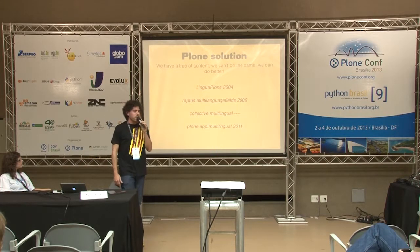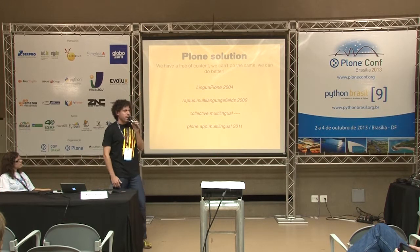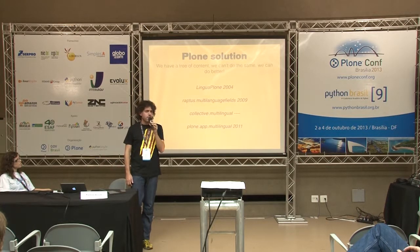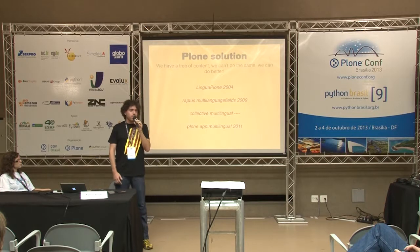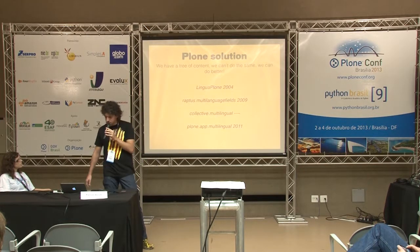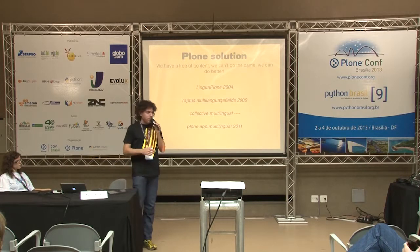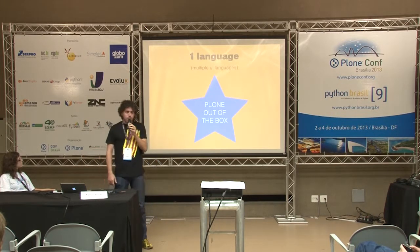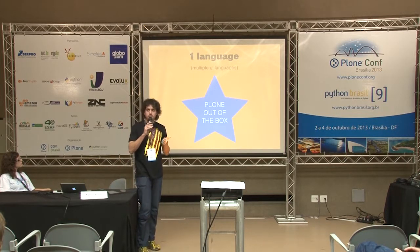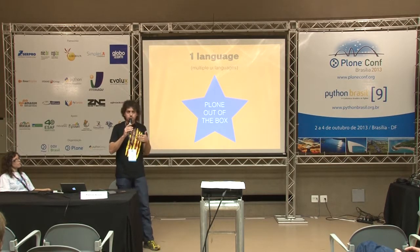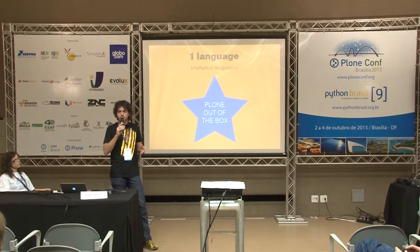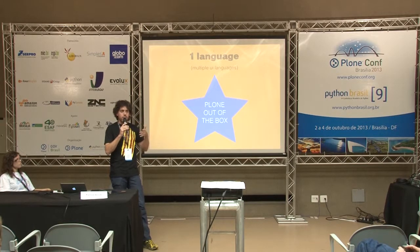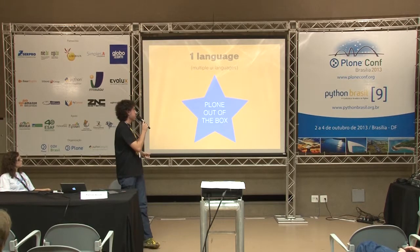Finally, PloneApp Multilingual, which we released in 2011, is now at version 1.2 — stable, running on many production sites. In order to talk about what it offers, we need to think about what the relation is between Plone and multilingual. If you install Plone out of the box, you have the option for one language — you can define the default language and multiple languages for UI translation only. You have the language selector and can switch between languages, which changes the UI and profiles, but you cannot translate content. Then we have the multilingual solution.